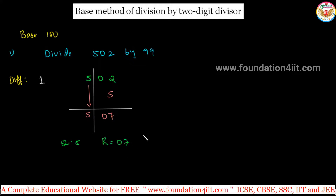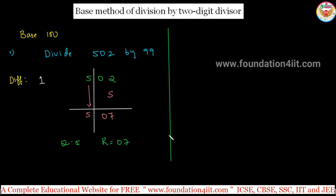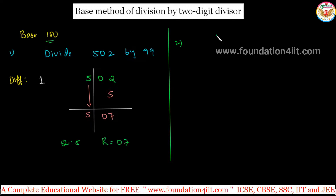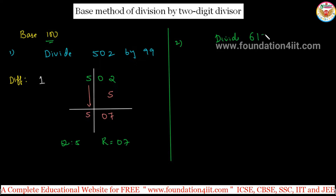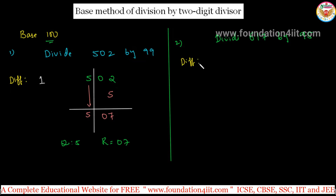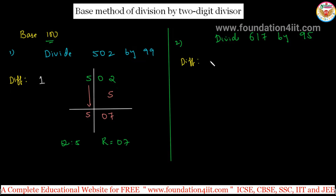So 5 is the quotient and 7 is the remainder. Let us have one more example with the same base of 100. Now the question is: divide 617 by 95. Immediately calculate the difference in your mind. 100 is the base, divide with 95, so 100 minus 95 is 5. The difference is 5.